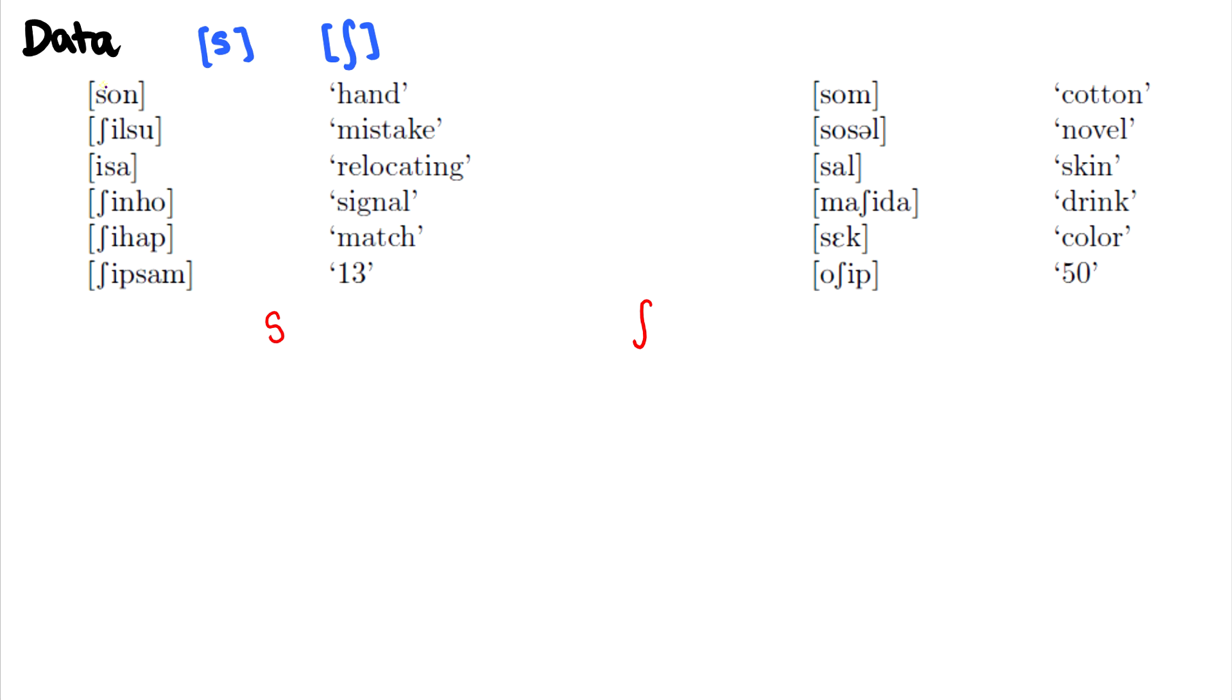So in the first word we see son, so the s o n. And in this environment it starts at the beginning of a word, so we can do the pound symbol on the left for the word boundary, and then immediately after it is the o. So this would be one environment for s.